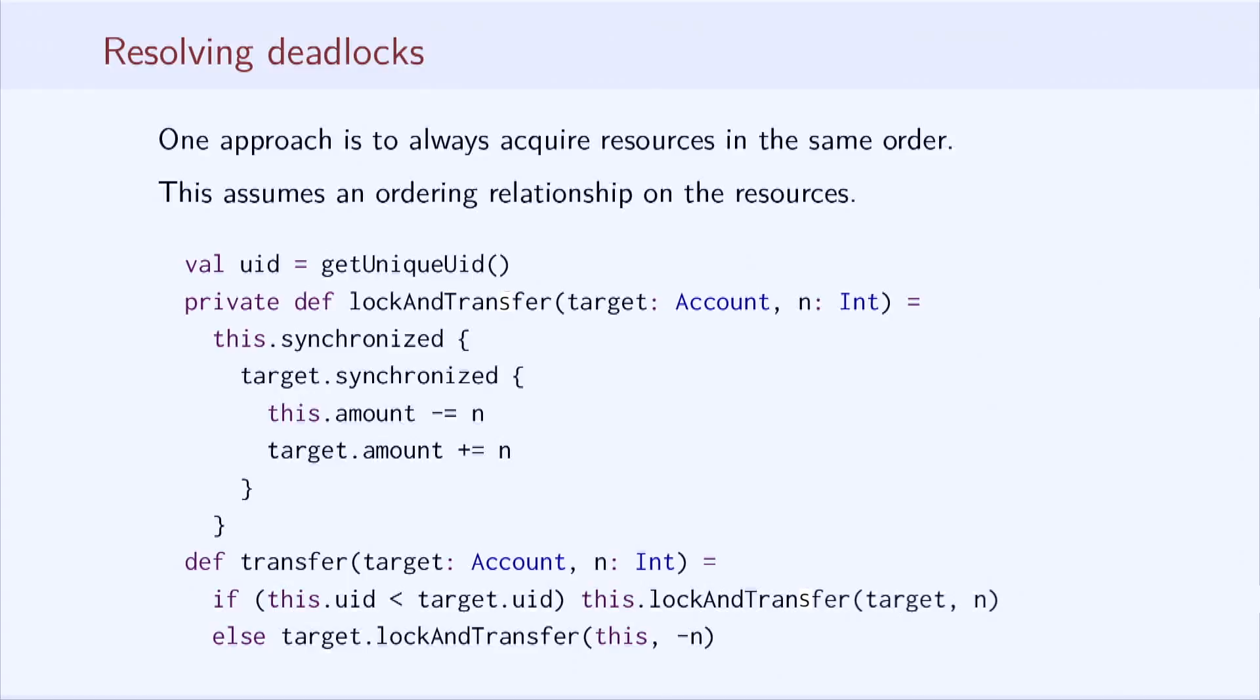We then define a private lock and transfer method that always does the transfer by calling synchronized on the this object first and then on the target. The public transfer method takes care of the ordering. It checks which of the two accounts has a smaller UID and does the locking in that order.